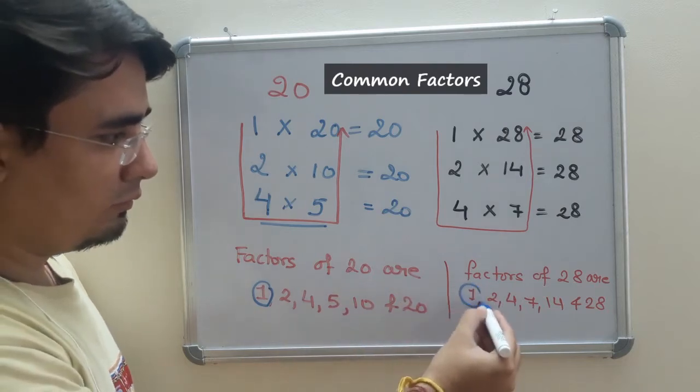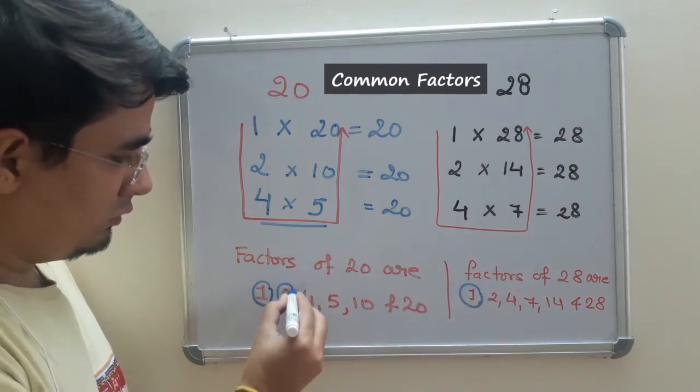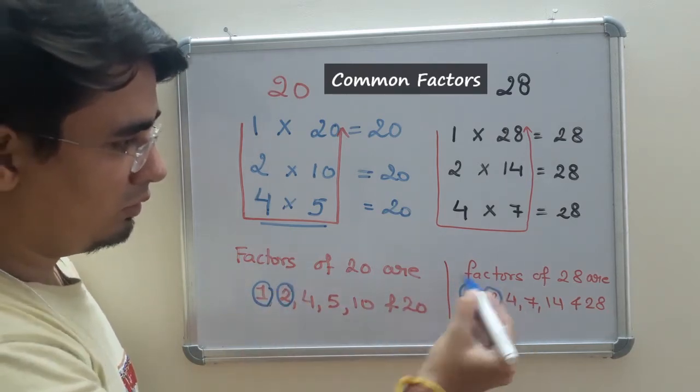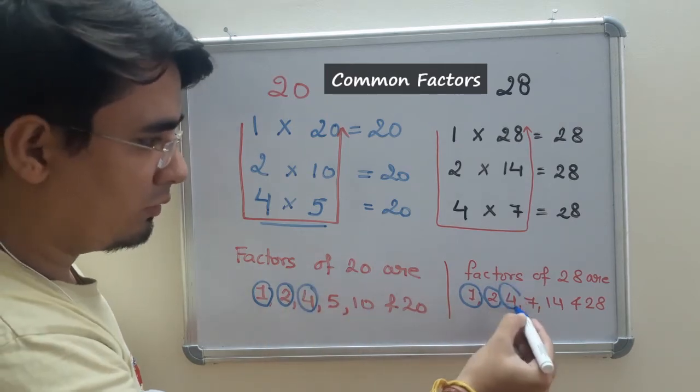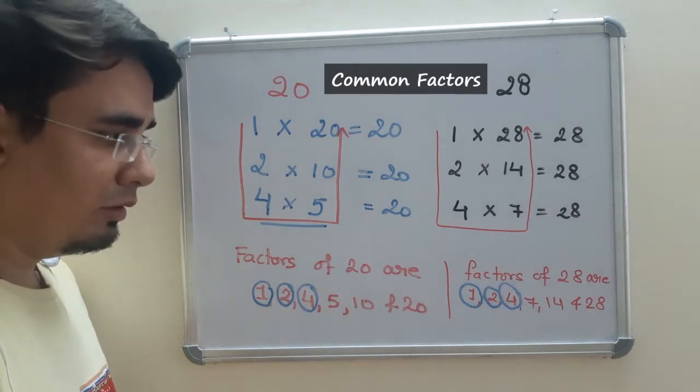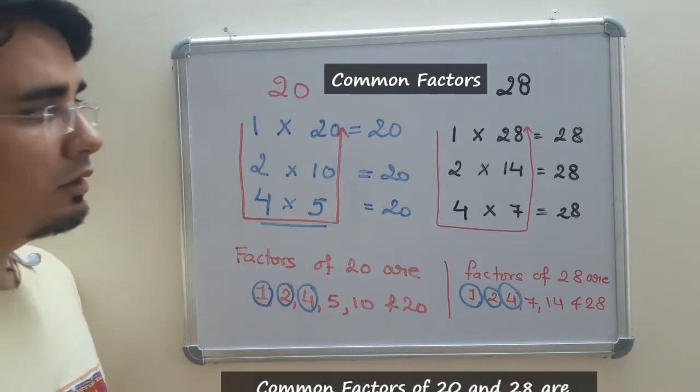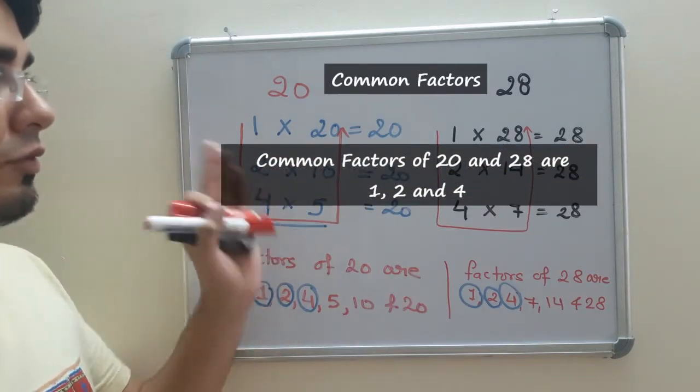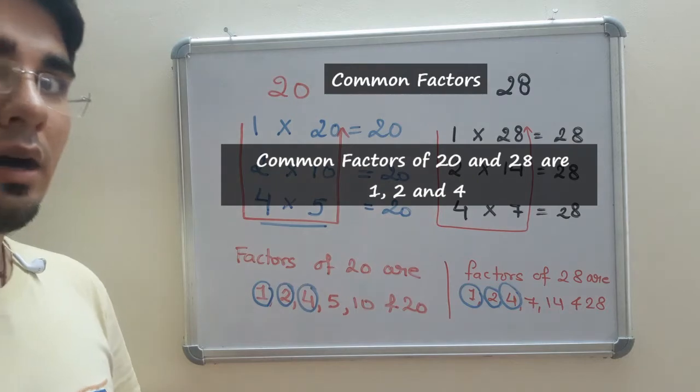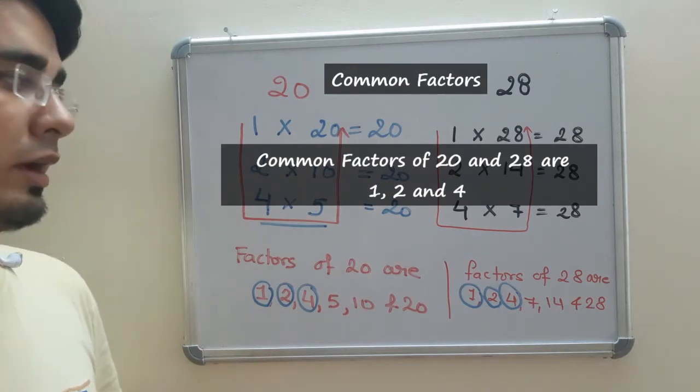First of all, find the factors like this way and find the common one. So as you can see, 1 is common, 2 is common, 4 is common. Is there anything else which is common? So I can write common factors of 20 and 28 are 1, 2, and 4.